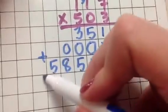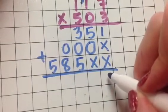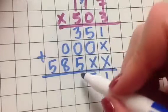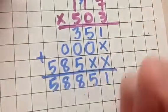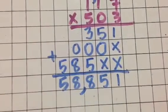1 plus 2 zeros is 1. 5 plus 3 is 8. 8, 5. And I can easily see there that my answer is 58,851.